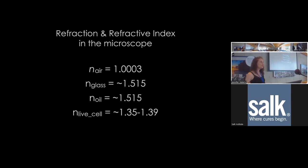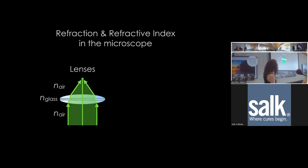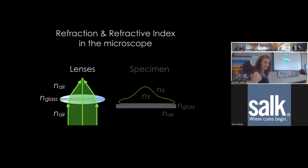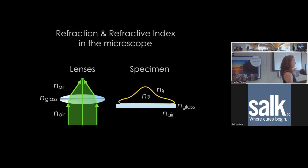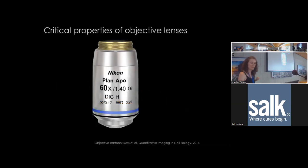Lenses focus light based on refraction: light travels through air, hits glass, refracts, hits the next glass surface, enters air, and refracts again to focus to a point. Your specimen sits on glass, which has a different refractive index than air, and your sample also has some refractive index—different from the glass or immersion media, especially for live biological samples. The objective lens has many important markings. The correction phrase (e.g., Plan Apo) indicates how well the lens has been corrected for aberrations. After the magnification is the numerical aperture, a critical number in the resolution equation.